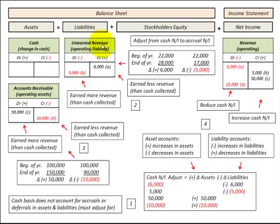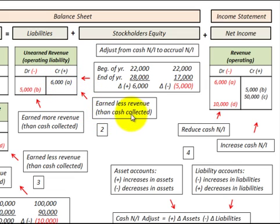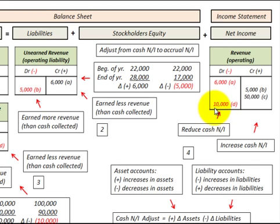Looking at liabilities — here is unearned revenue. In the case where we had a six thousand dollar increase in unearned revenue for the year, we credit unearned revenue for six thousand dollars. This is where we earned less revenue than the cash that was collected, so the debit reduces revenue, which reduces the cash net income.